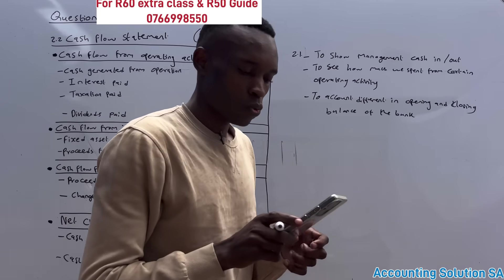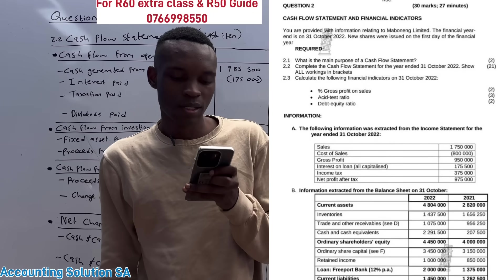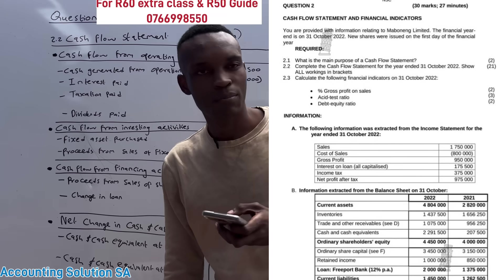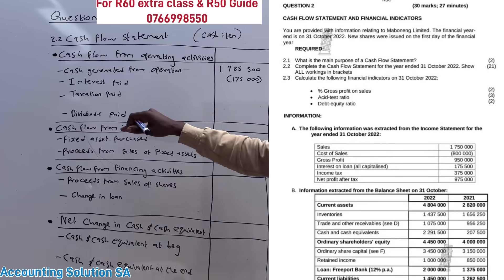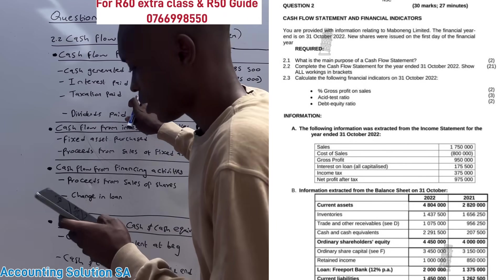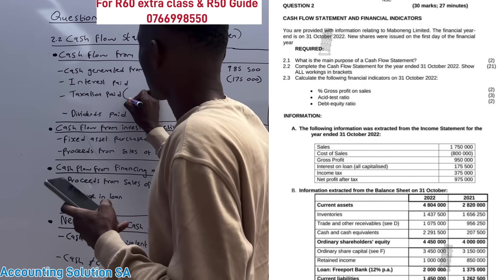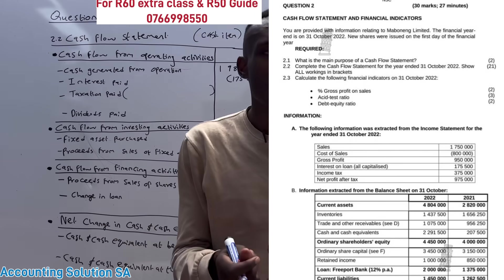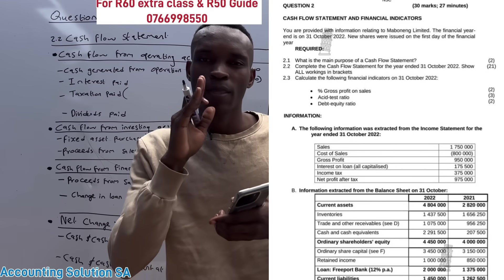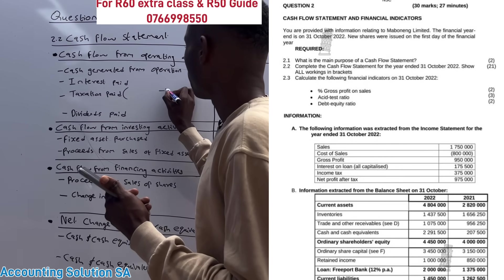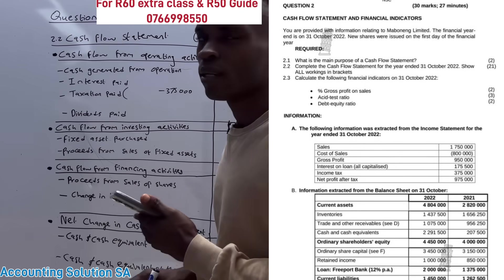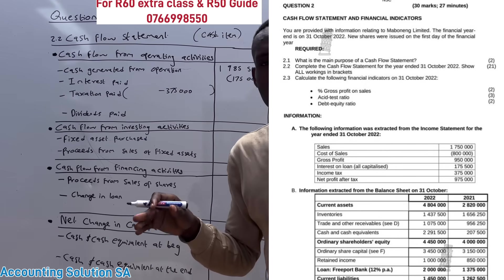Now let's go to the main question: complete the cash flow statement for the year ended 30 October 2022 and show all workings in brackets, because those workings carry marks. Two amounts are already given on the question paper, and we need to calculate taxation paid and dividends paid. When calculating taxation paid, you need to check the opening balance, closing balance, and the tax amount from the income statement. The income tax from the income statement is 375,000 — write it as negative because minus represents outflow.